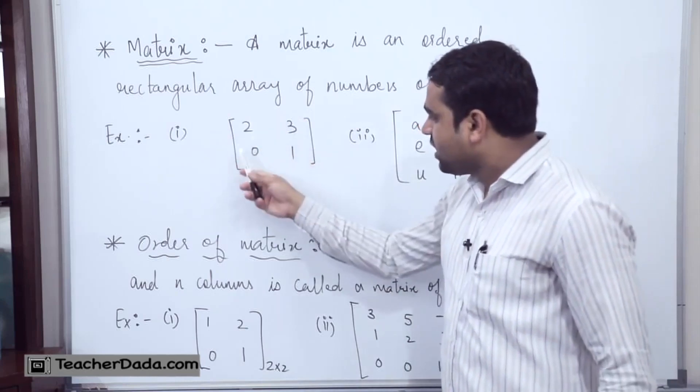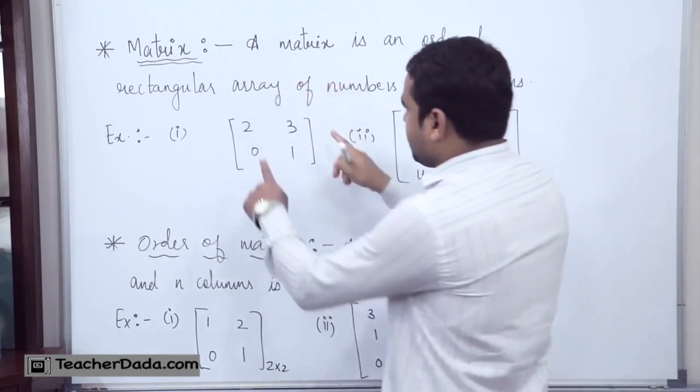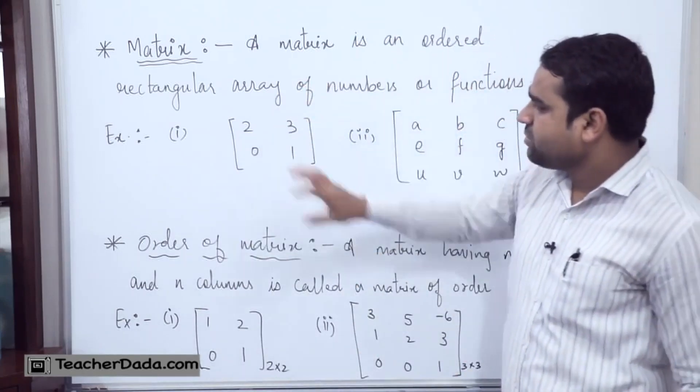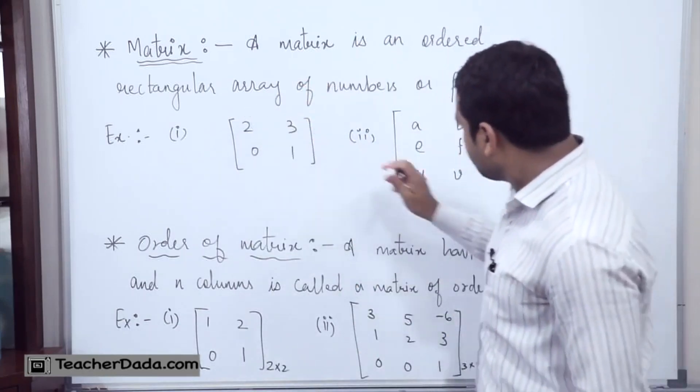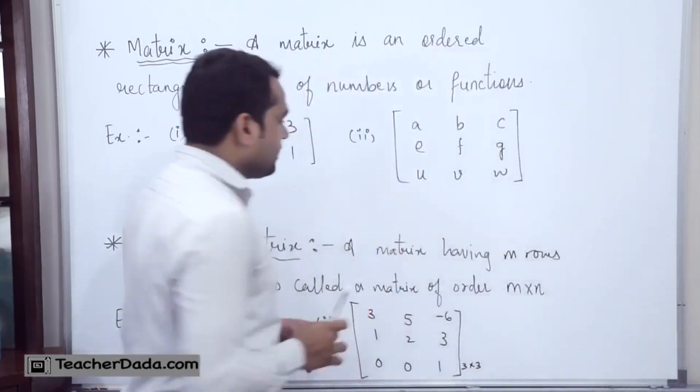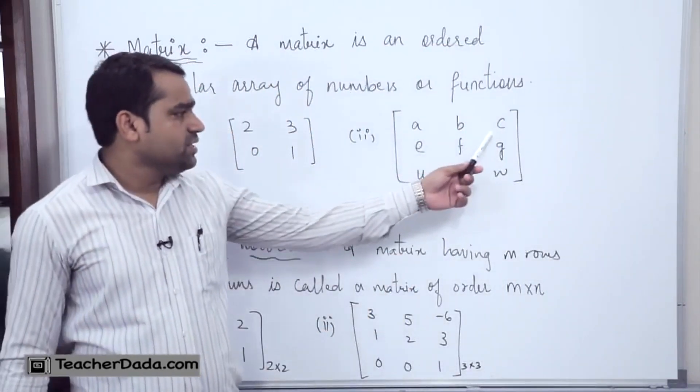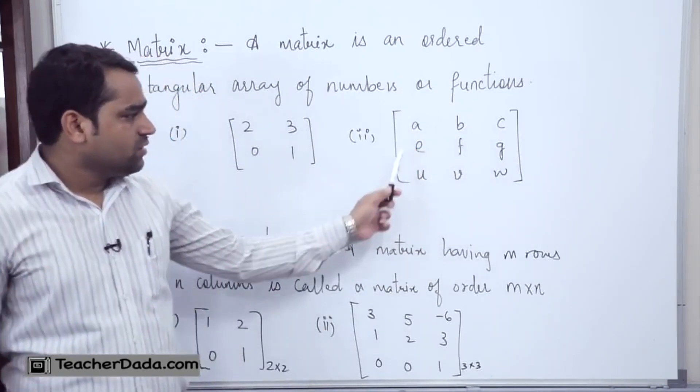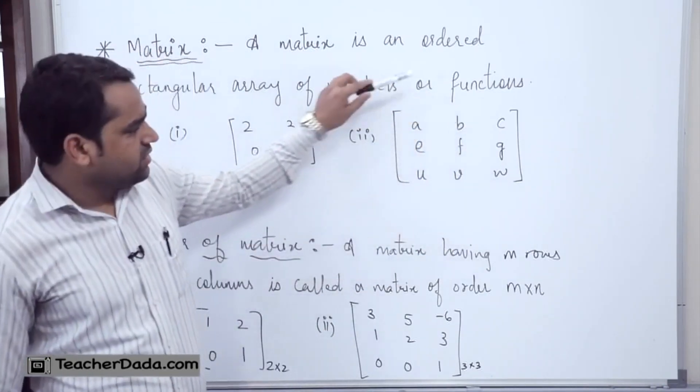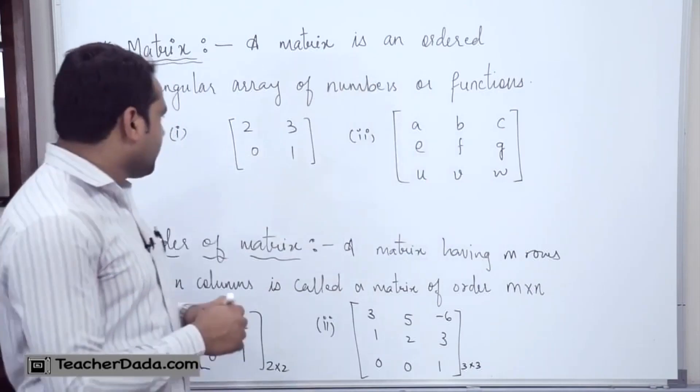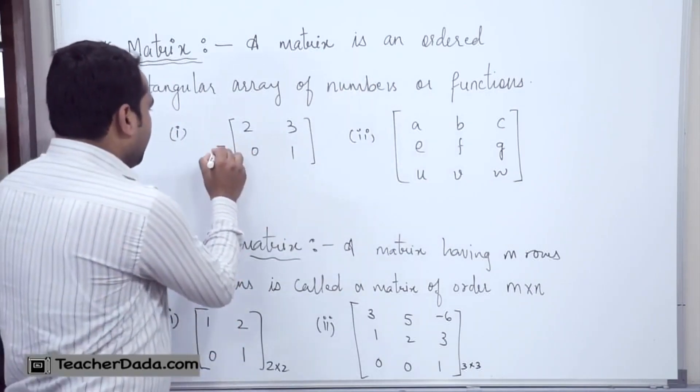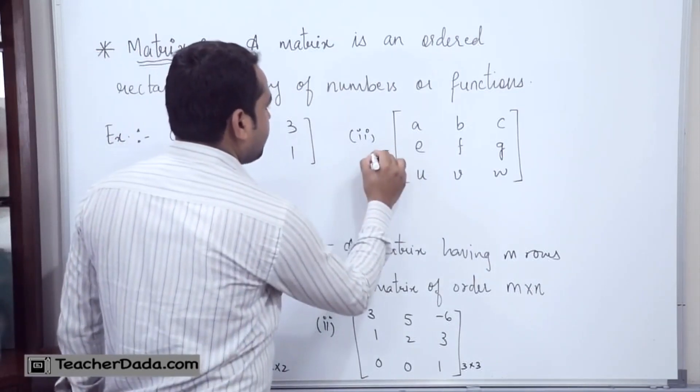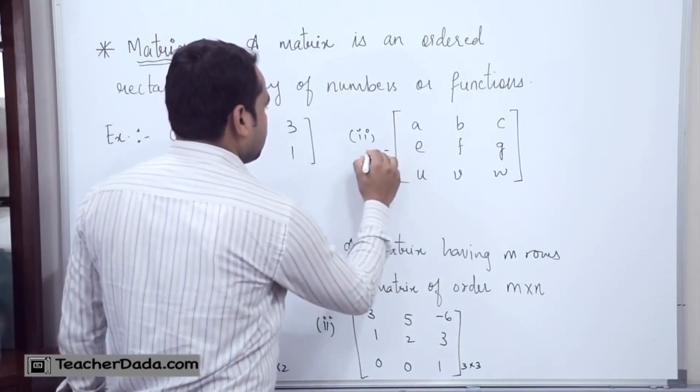These elements are the elements of the matrix, and this symbol indicates that we have written the elements in the matrix. Similarly, you can see the next example: a, b, c, e, f, g, u, v, w. These are the elements of a matrix, and we can give a name to the matrix also. For example, I can write this as let it be matrix A, and this as matrix B.